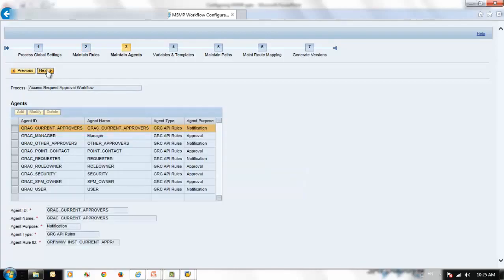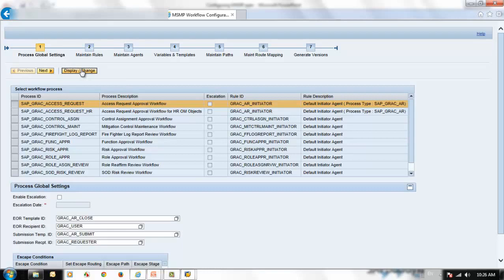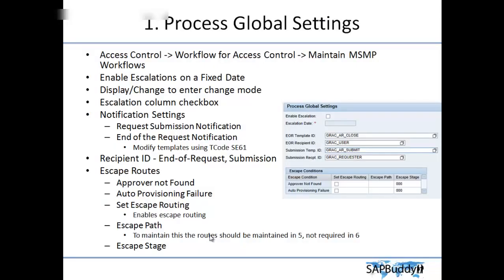The same applies for all the other stages. These are all the process IDs delivered by SAP. If you would like to change any of these process IDs and their configuration, click the Change button — this enables editing. Let's look at all other configuration available in the same Process Global Setting. To access MSMP: go to SPRO, navigate to Governance Risk and Compliance, navigate to Access Control, open Workflow for Access Control, then Maintain MSMP Workflow, which opens Internet Explorer where you configure the MSMP workflow. There are additional settings available below the process IDs.